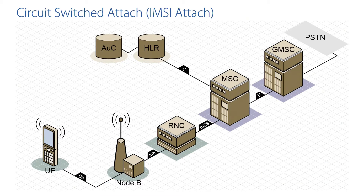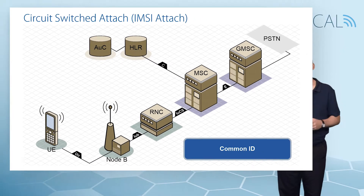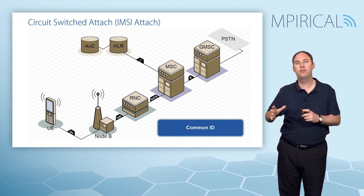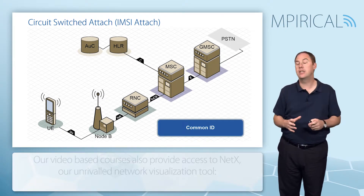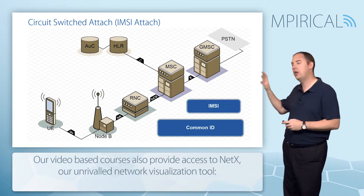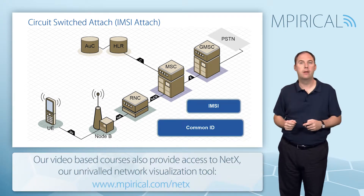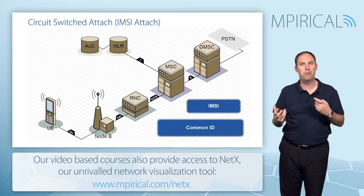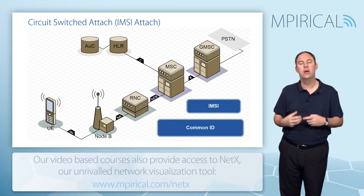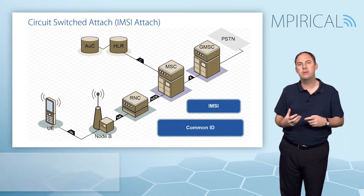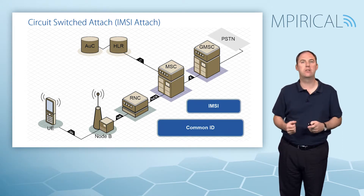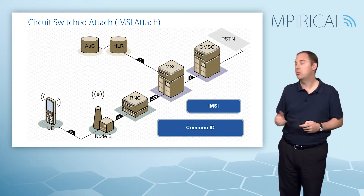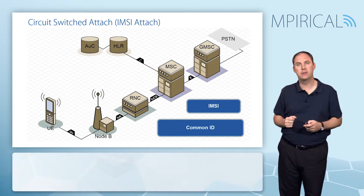The next procedure you would typically see is a common ID. The common ID is sent from the core network down to the RNC and it includes the IMSI. The idea here is that because the RNC is connected to both the SGSN and the MSC — the packet and circuit switch sides — we need to make sure it knows the identity of this subscriber, so we pass it down in the common ID parameter.